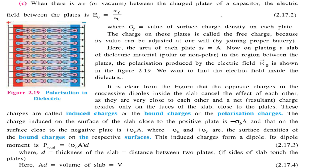When there is air or vacuum between the charged plates of a capacitor, the electric field between the plates is given by E₀ = σ_F / ε₀, where σ_F is the surface charge density of each plate. The charge on these plates is called the free charge because its value can be adjusted at will — we can connect any appropriate battery. Let the area of each plate be A.